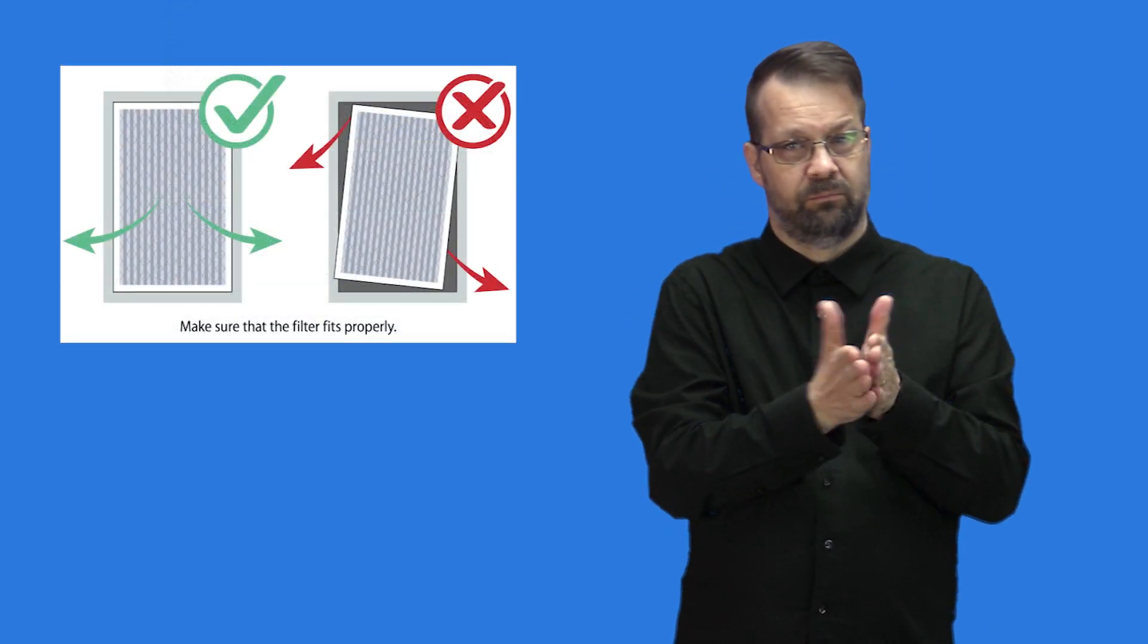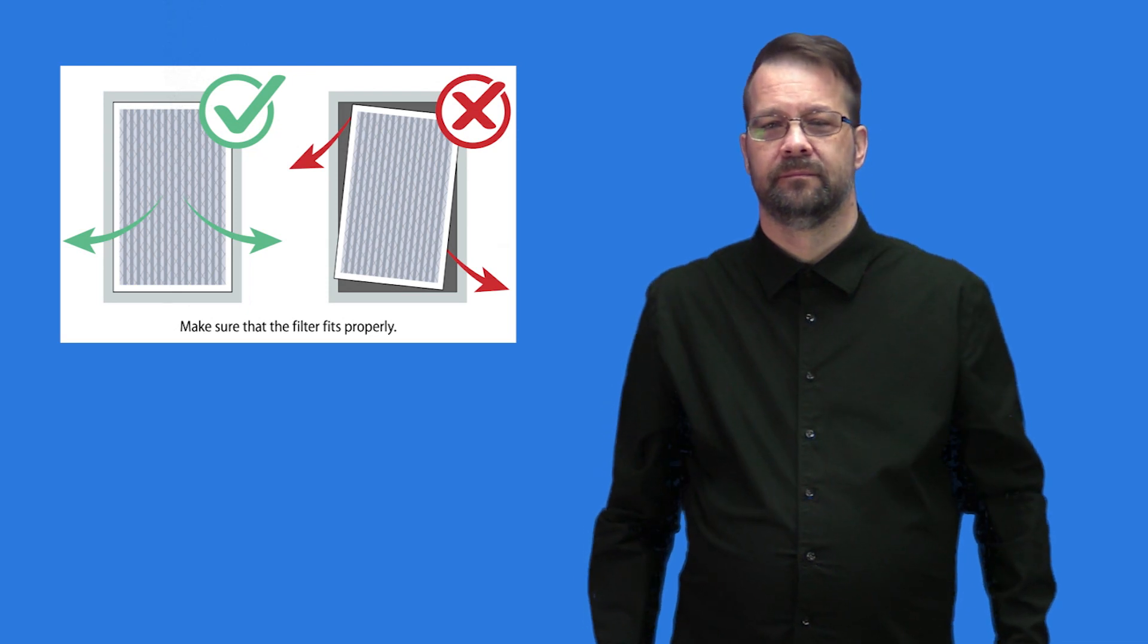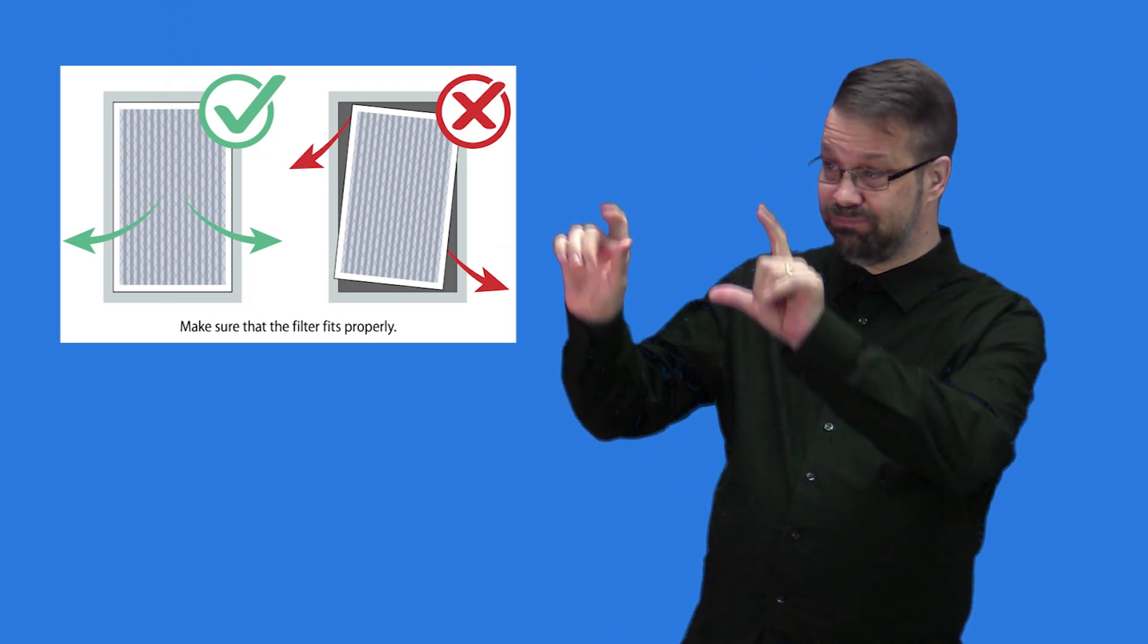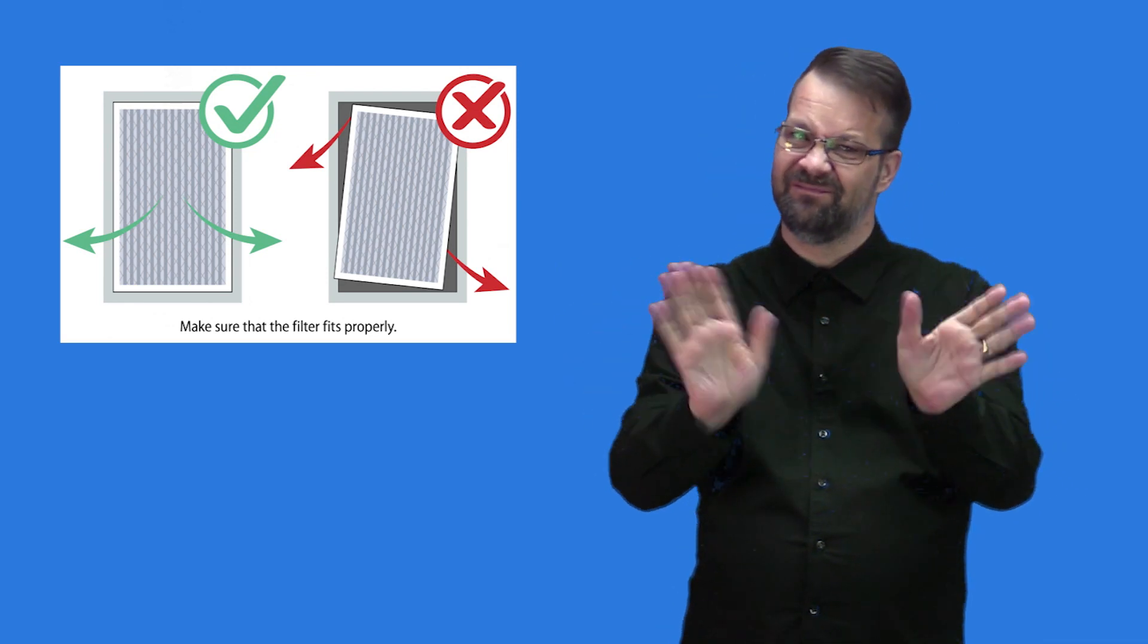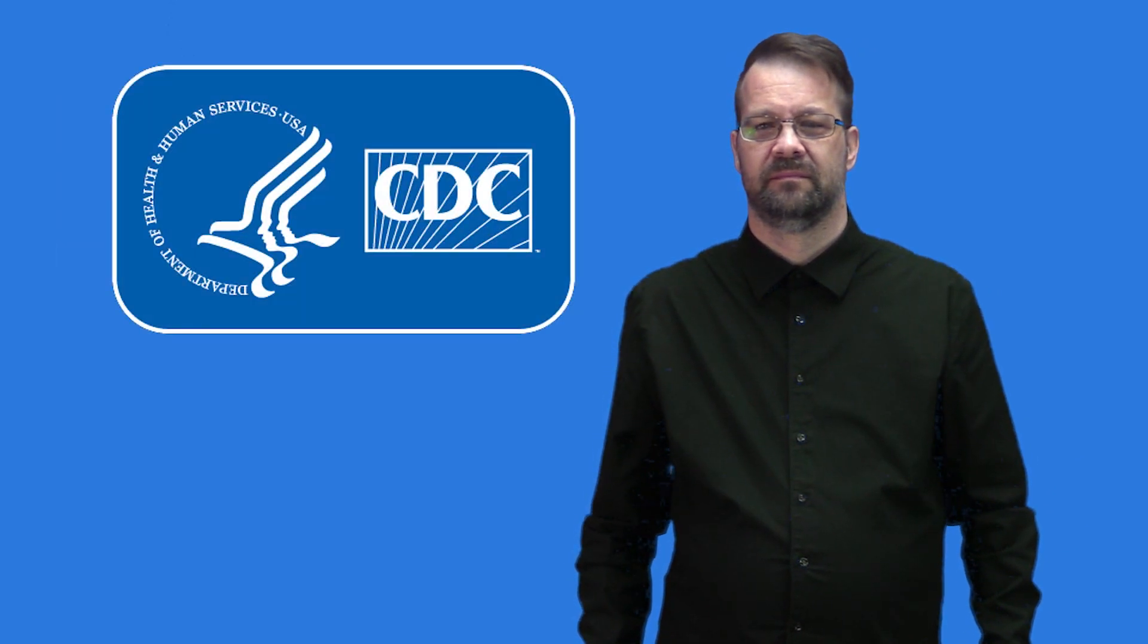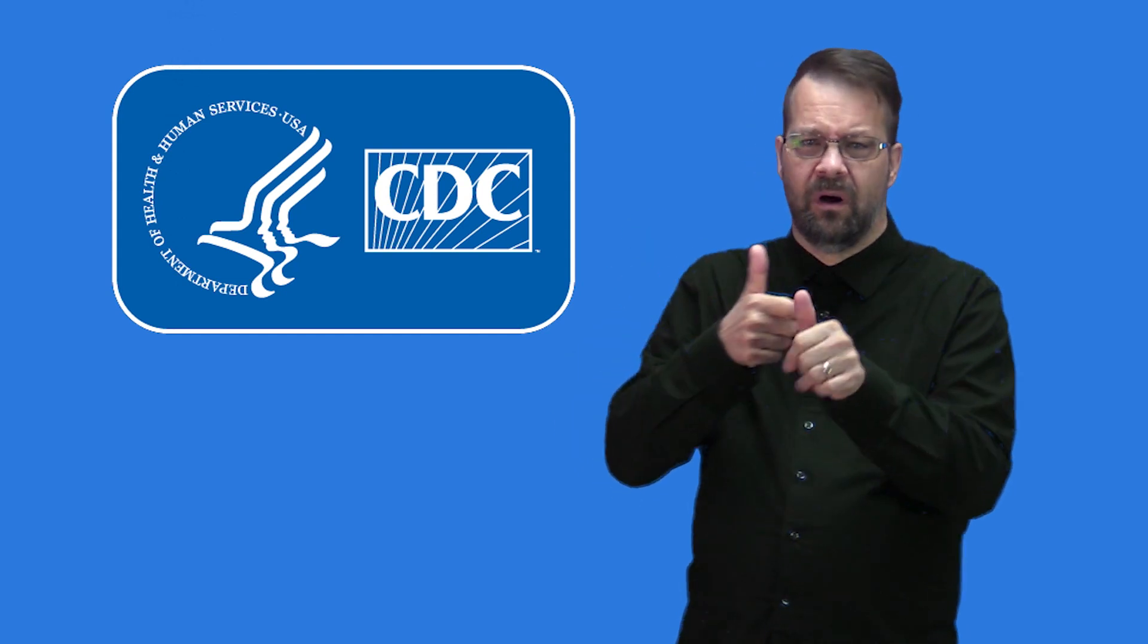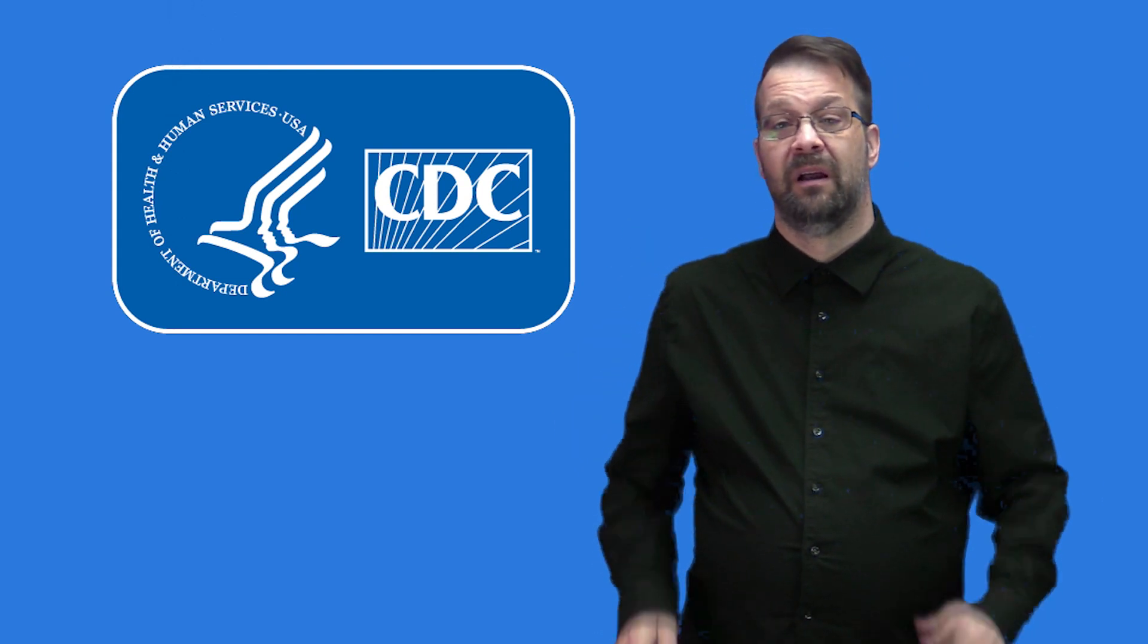Then, make sure the filter fits properly. It should align with the air vent, like the picture on the left. The picture on the right shows a filter that's not aligned with the air vent. Change your filter every three months or according to the manufacturer's instructions. Have the ventilation system inspected and adjusted by a professional every year.